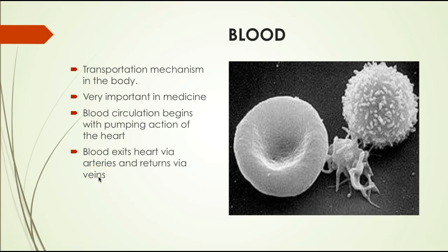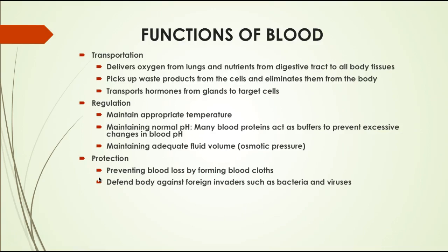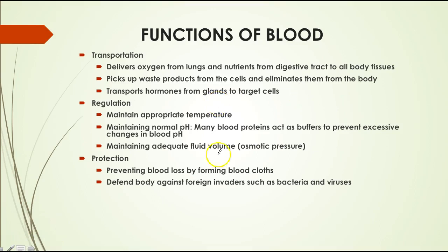Blood transports oxygen from your lungs and nutrients from your digestive tract to all your body tissues. It gets rid of waste products, and hormones reach their target organs and tissues via the blood. The blood also helps maintain appropriate body temperature and helps maintain normal pH, which for humans is approximately 7.4. It also helps maintain adequate fluid volume and osmotic pressure.